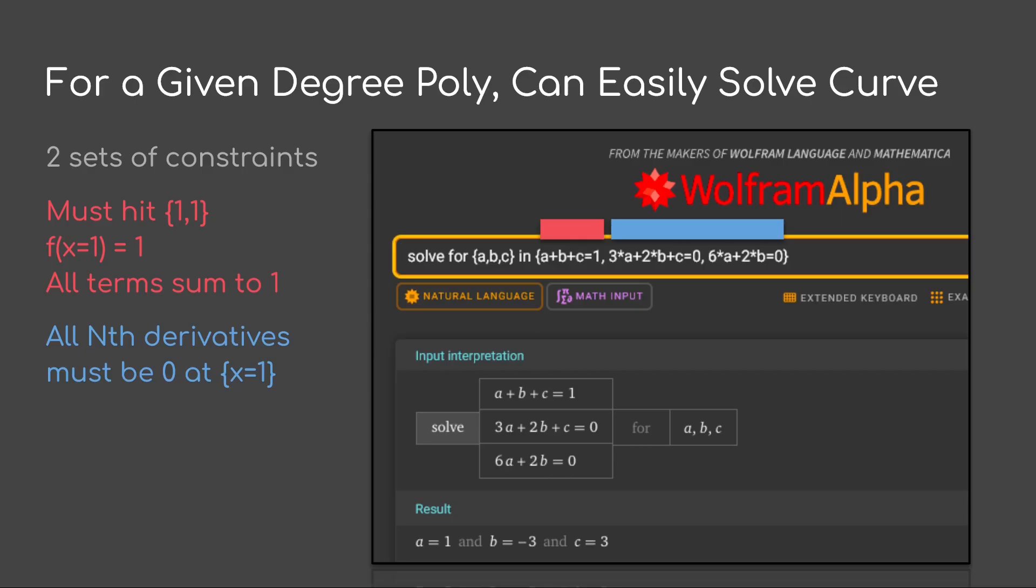The next set of constraints is our derivatives. All of our derivatives and order derivatives must be 0 at x equals 1. So we just write those out. In this case, we have three unknowns. So we just put in three equations and we have a solution.